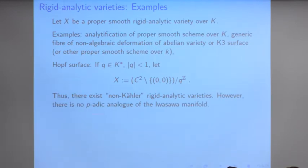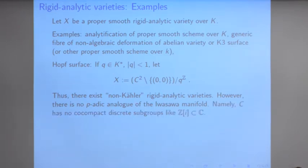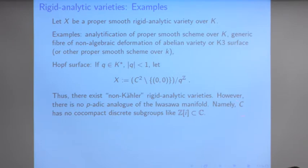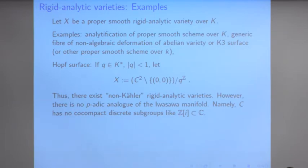However, you cannot form a p-adic analog of the Iwasawa threefold. In the complex case we used that there are co-compact discrete subgroups like Z adjoin i inside the complex numbers. But the p-adic numbers have no co-compact discrete subgroups — in fact, no discrete subgroups at all. For example, the subgroup generated by 1 inside Q_p contains all powers p^n, but those p^n go to 0 in the p-adic topology, so in any open neighborhood of 0, sufficiently high powers of p will live, meaning the subgroup can't be discrete. So you don't really know what to divide by if you try to mimic the Iwasawa threefold construction in the p-adic case.